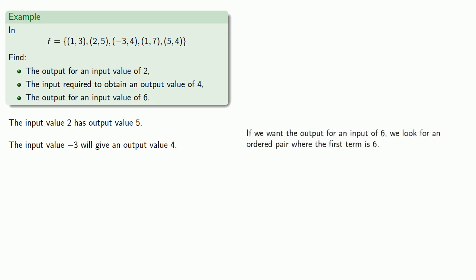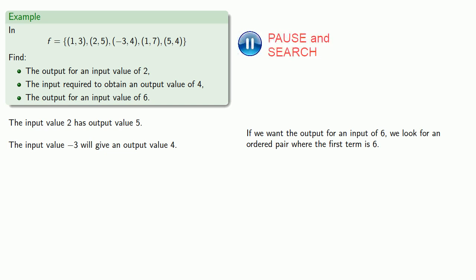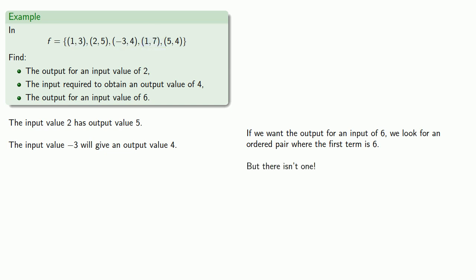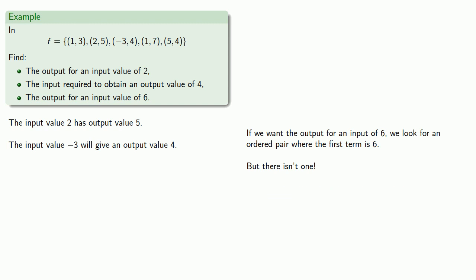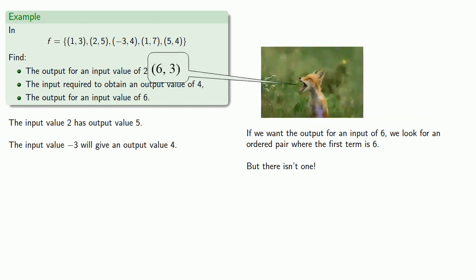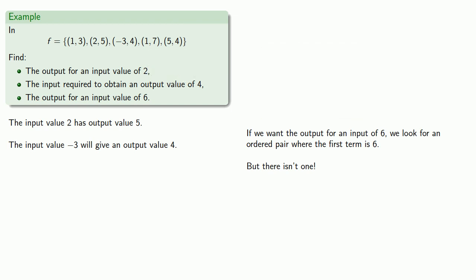Finally, if we want the output for an input value of 6, we look for an ordered pair where the first term is 6. Looking through the list, there isn't one. It's important to realize we can't just make up facts — if there isn't an ordered pair with input value 6, we have to say that the relation is undefined for the input value 6.